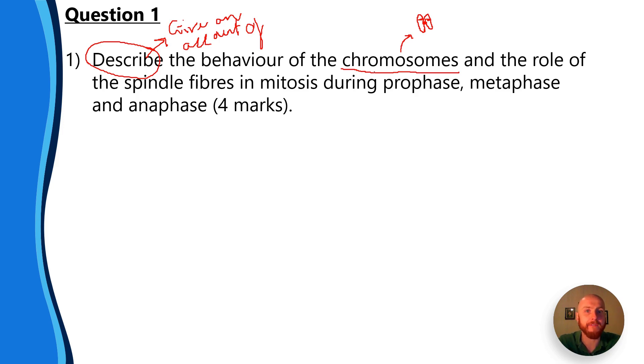So we're going to describe the behavior of the chromosomes and the role of the spindle fibers. So let's just underline spindle fibers. Now we know that they branch out from the centrioles, which are an organelle within cells in mitosis. So we're not talking about meiosis, we're talking about mitosis during prophase, metaphase and anaphase. So three nice distinct phases there to get into.